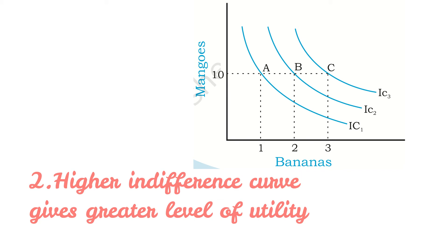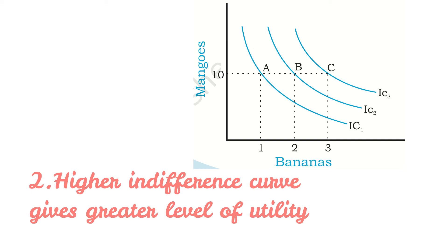Consider the different combinations of bananas and mangoes — A, B and C — depicted in the graph. Combinations A, B and C consist of the same quantity of mangoes but different quantities of bananas. Since combination B has more bananas than A, B will provide the individual a higher level of satisfaction than A. Therefore, B will lie on a higher indifference curve than A, depicting higher satisfaction. Likewise, C has more bananas than B with the same quantity of mangoes. Therefore, C will provide a higher level of satisfaction than B and also lie on a higher indifference curve than B. Thus, the higher indifference curve gives a greater level of utility.